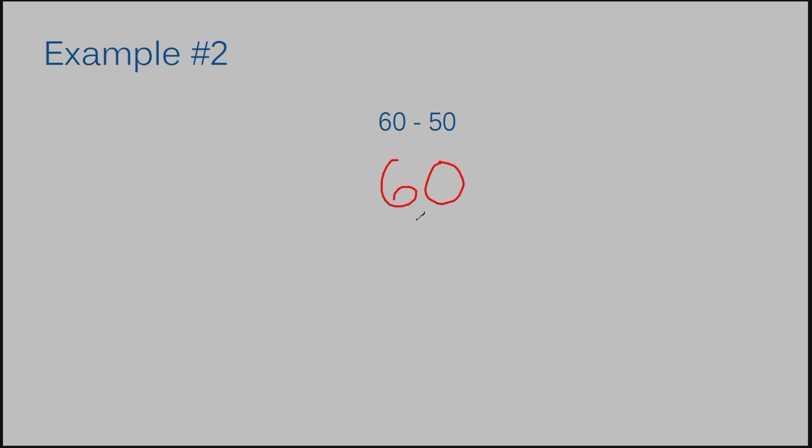Thankfully, these problems are not that difficult when stacking these numbers on top because they both have the same number of digits in them. I don't have anything complicated to figure out when lining my numbers up. I have a two-digit number which is 60 and another two-digit number which is 50. All I have to do is line them directly on top of each other.